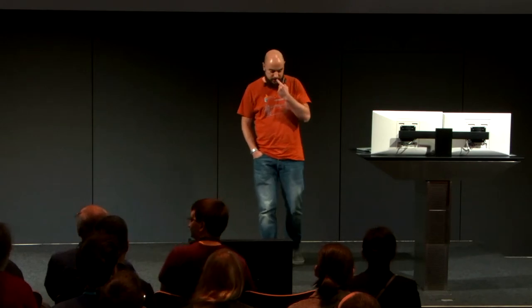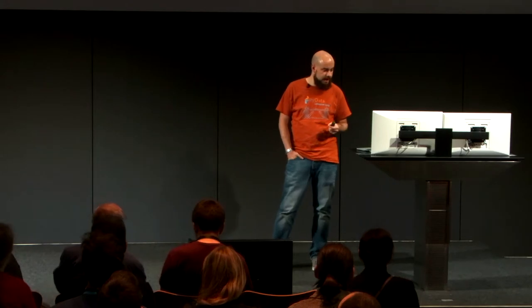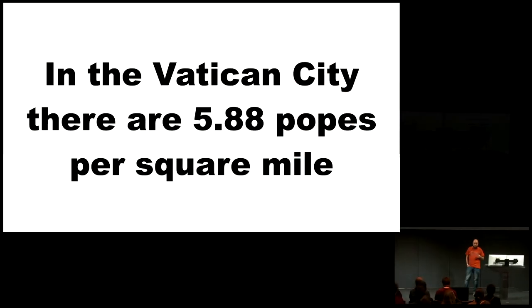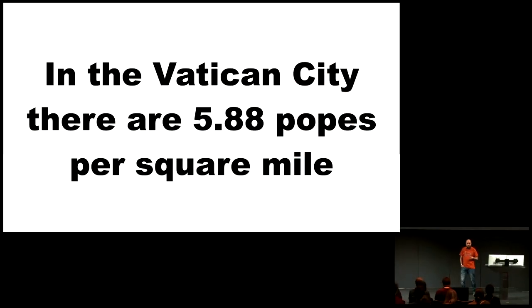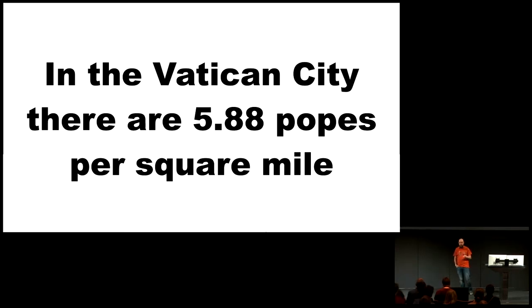As a starting point, you can consider the following statement: in the Vatican City, there are 5.88 popes per square mile. And the number is correct — I'm not lying. I don't know much about the Vatican City per se, but I kind of feel that something funny is going on here.